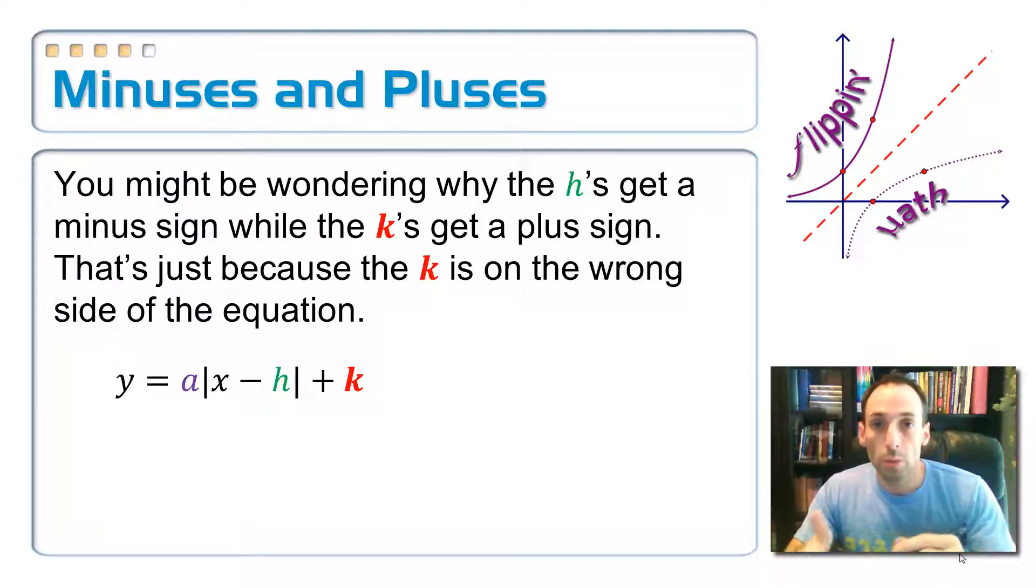And remember whenever we did the transformations, the h was backwards, that if it was a minus 3, this actually meant to go to the right 3, and if it was a positive 3, that meant to go to the left 3. Totally confusing.